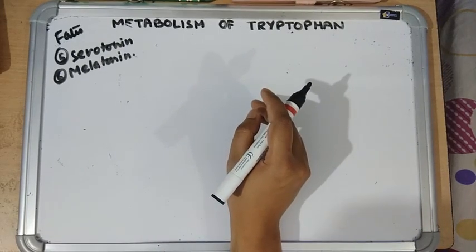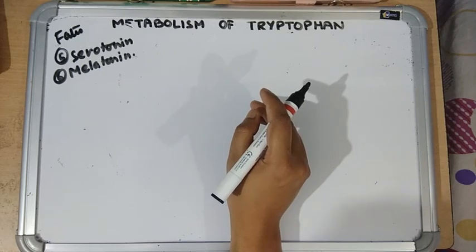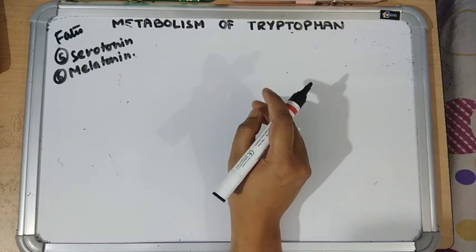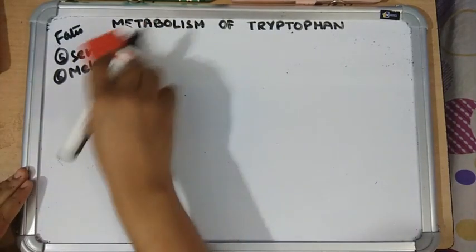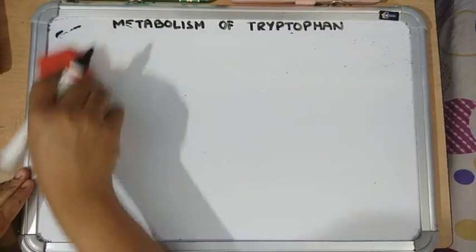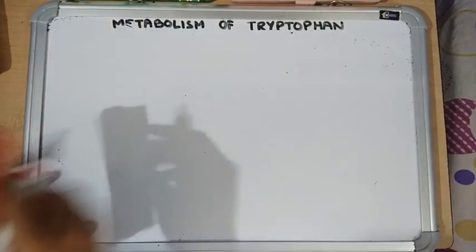Melatonin is a neurotransmitter produced by the pineal gland, involved in diurnal variation, the sleep-wake cycle, and biological rhythms.